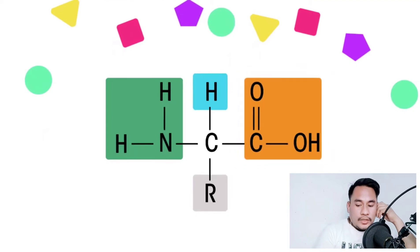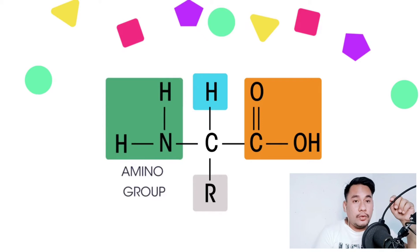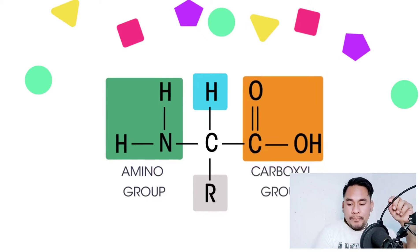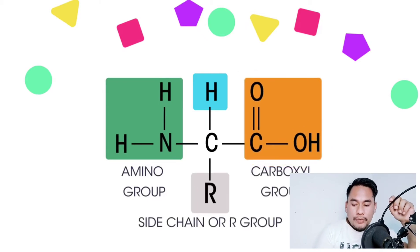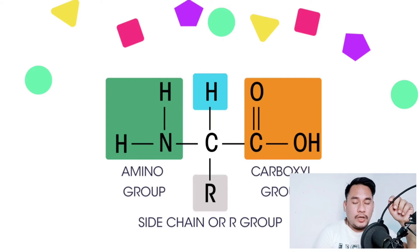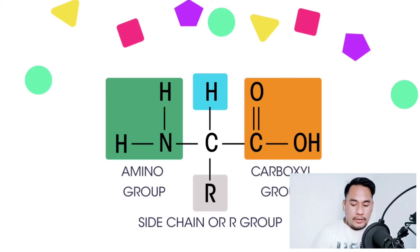All amino acids are compounds with a similar basic structure. They have an amino group, a carboxyl group, and a side chain group that is specific to each amino acid. There are 20 different amino acids.